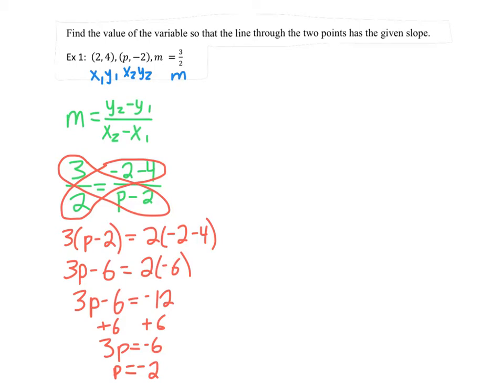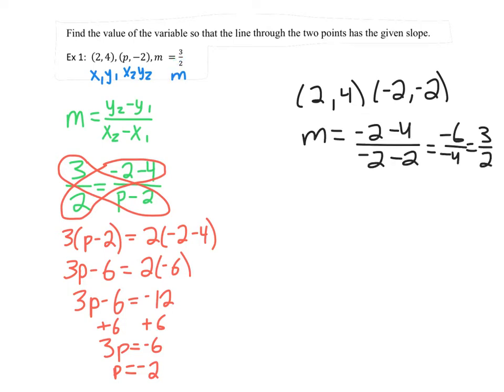This means that if I take the points 2, 4, and negative 2, which is what we found for p, comma negative 2, I should get the given slope, which was 3 over 2. That would be a way to check this. And I've checked it, and I got it correct.